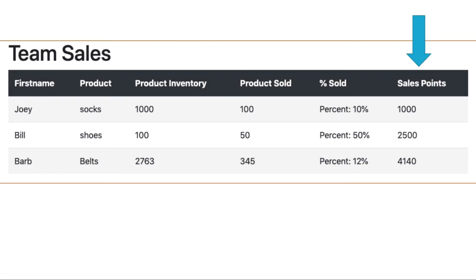So here we have in our final column here, sales points, the product of those two numbers. So 1000, 10% times 100. 50 times 50, 2500, and 12 times 345 is 4140. So if there's some kind of sales system that you needed to multiply together, you could use this widthratio to do that as well. Just a down and dirty way to make this happen. We'll take a look at some alternatives now.